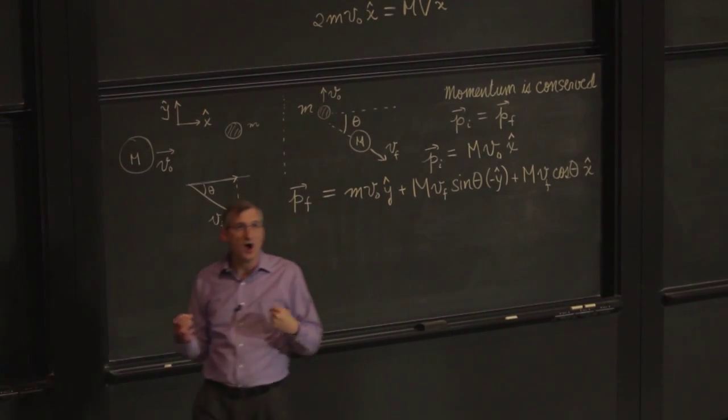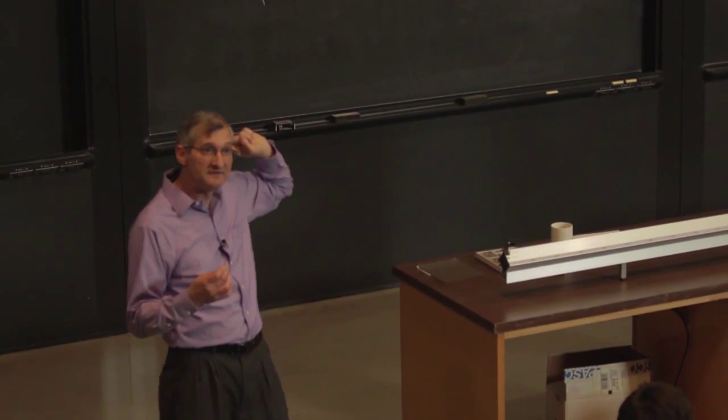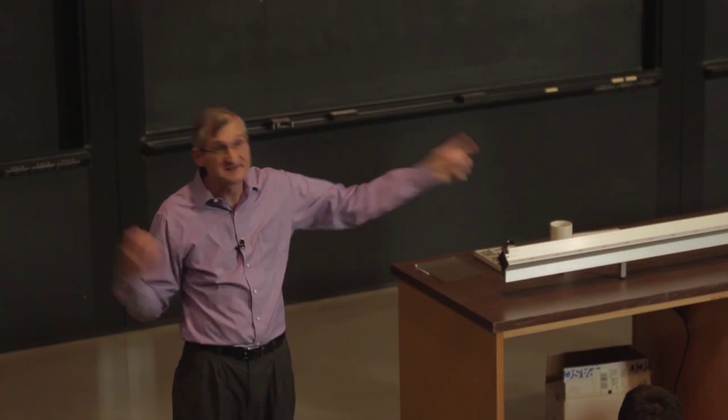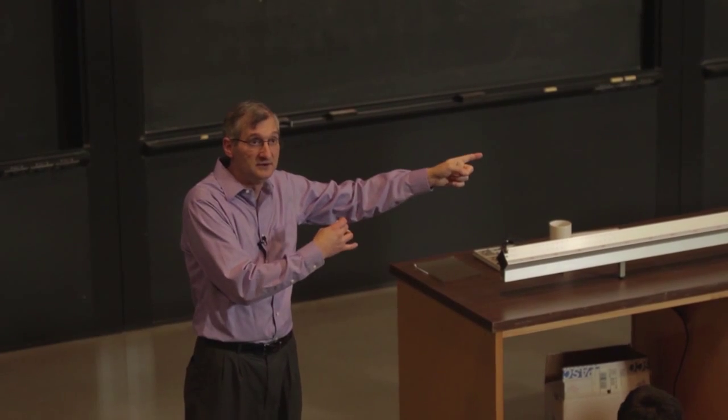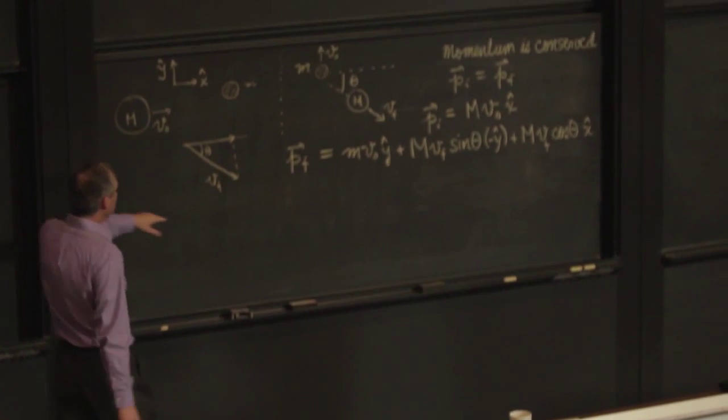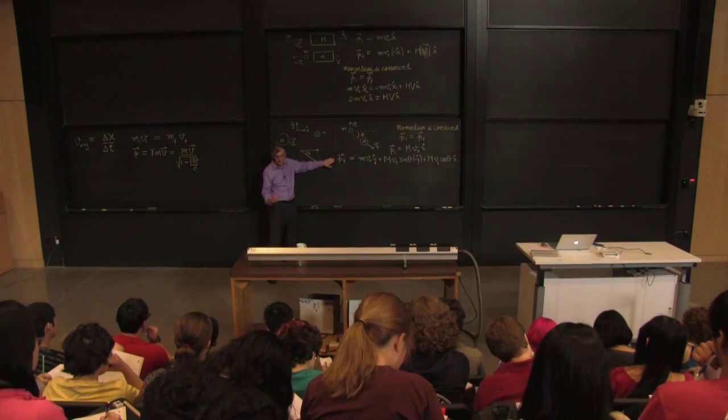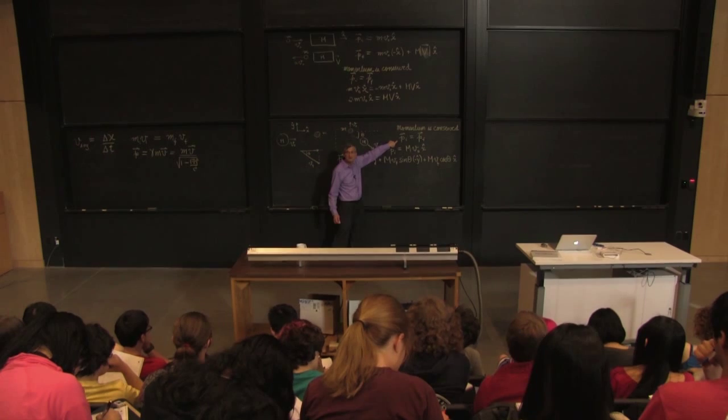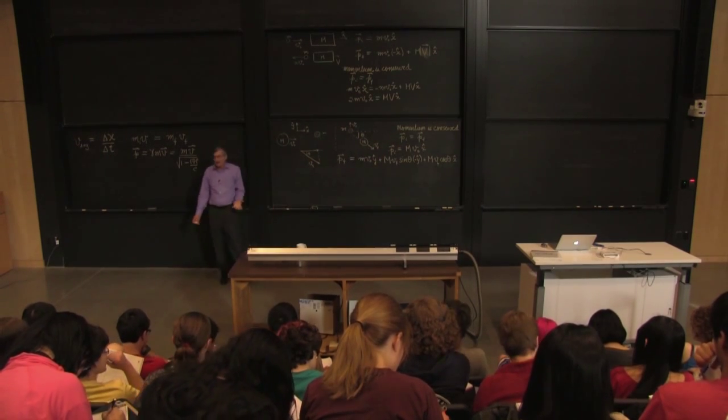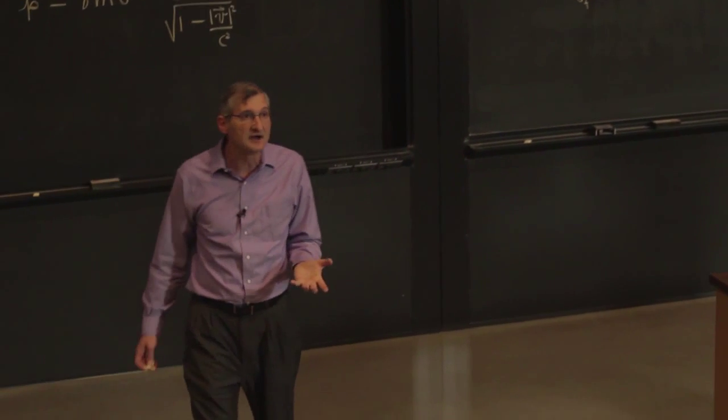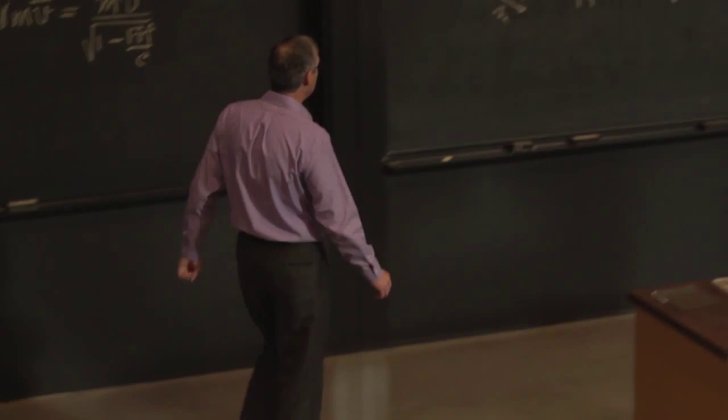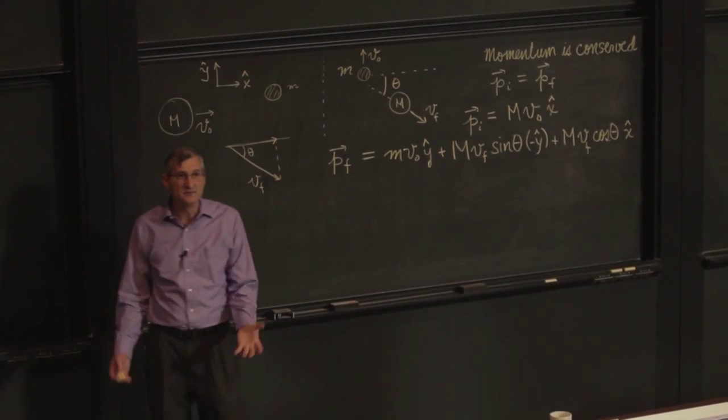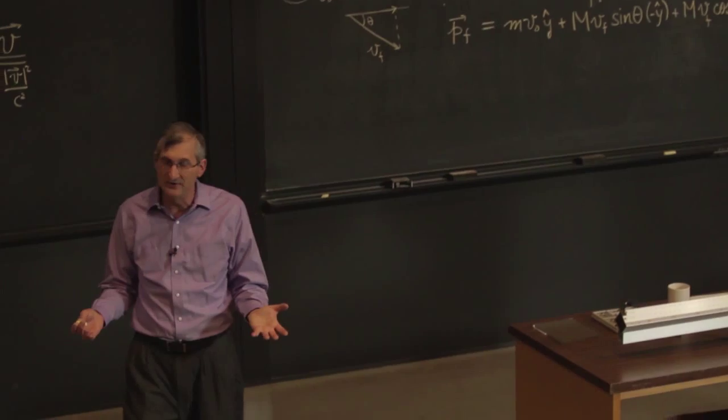I'm sticking with the vectors up till now to try to emphasize that this is the direct translation of that statement, and now because a unit vector in the x direction is orthogonal and independent of a unit vector in the y direction, in order for this to equal that, I have to have the same x component and the same y component on both sides.